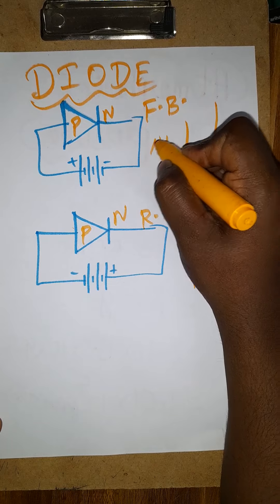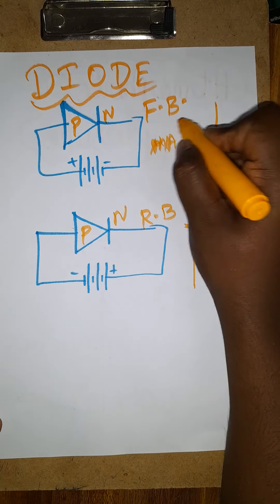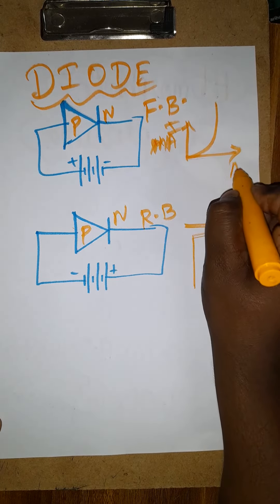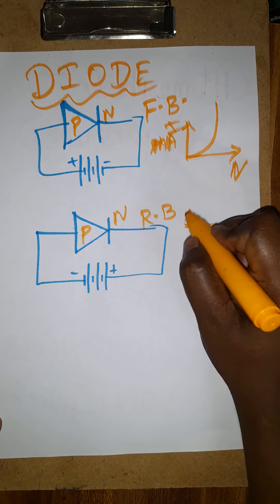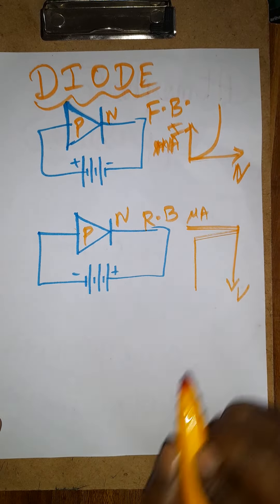Current versus voltage will give us milliampere for forward bias. For reverse bias, we get microampere current with the applied voltage.